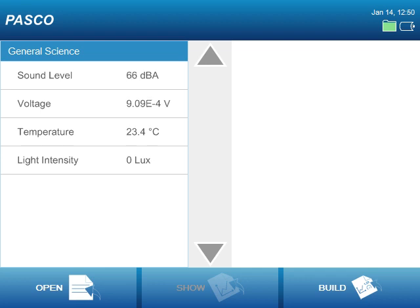Notice that the readings for these measurements are all live. This means that one of the four ways we can use the Spark Science Learning System is as a portable meter. Simply connect a sensor and stay at the home screen to view the measurements from that sensor.